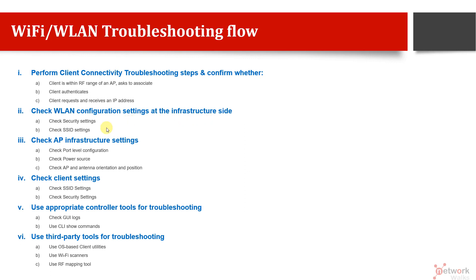Check your security settings and your SSID settings, whether they are correct, and log into your infrastructure to confirm everything. If this is also good, the next step is to check the access point infrastructure settings: check your port-level configuration, your power source, your access point and antenna orientation and position — whether it's in the correct position, correct level, and correct height.